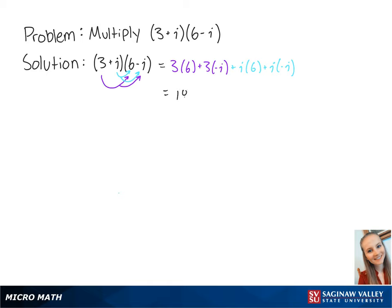This becomes 18 minus 3i plus 6i minus i squared. Since i squared is equal to negative 1, this last term is equal to negative negative 1, which is equal to positive 1.